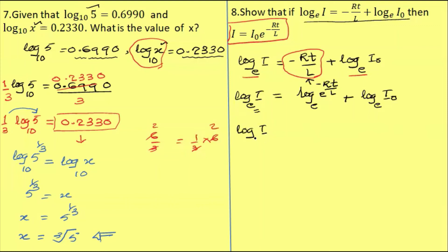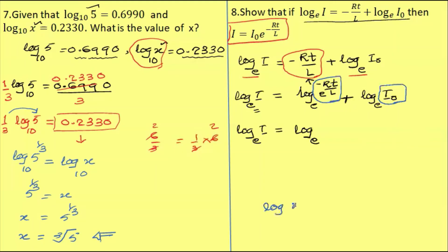Log i base e equal to log base e. Log n base b plus log n base b — we will add m to n to get log mn base b. So we will add e power minus Rt by L into i₀.